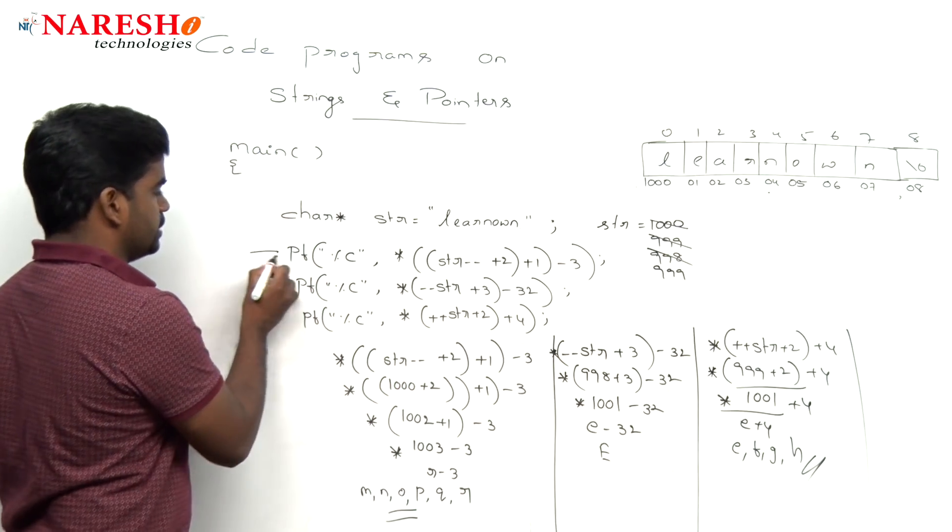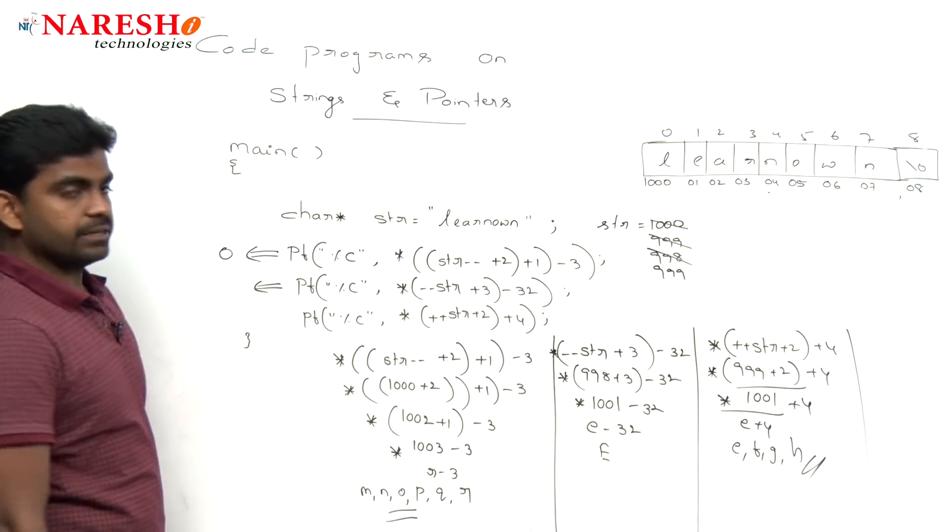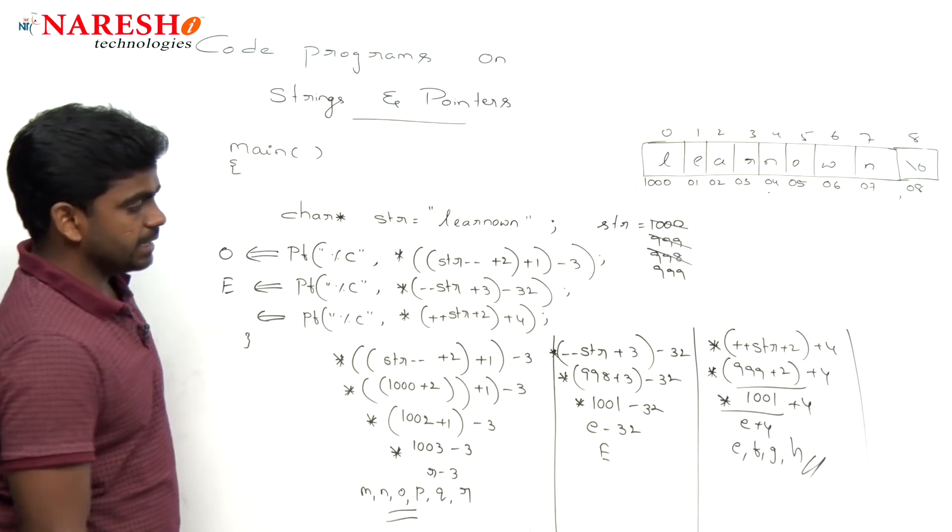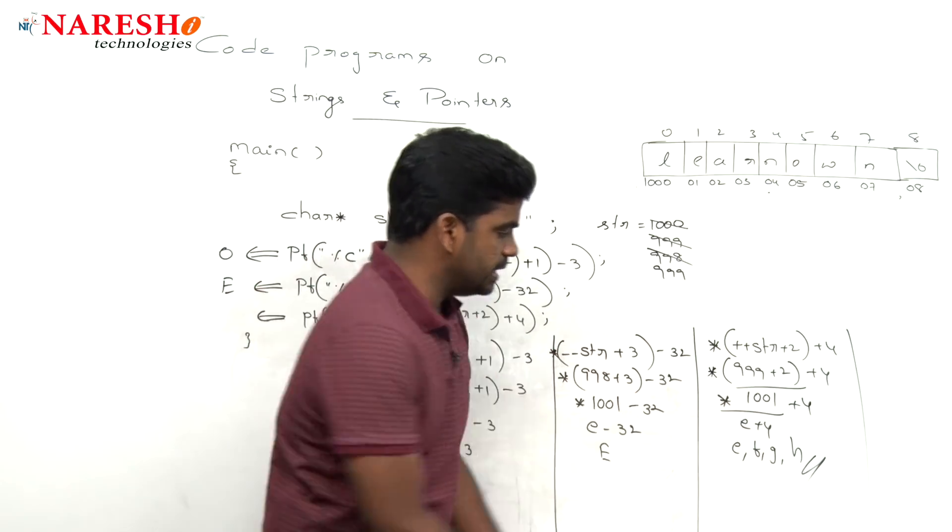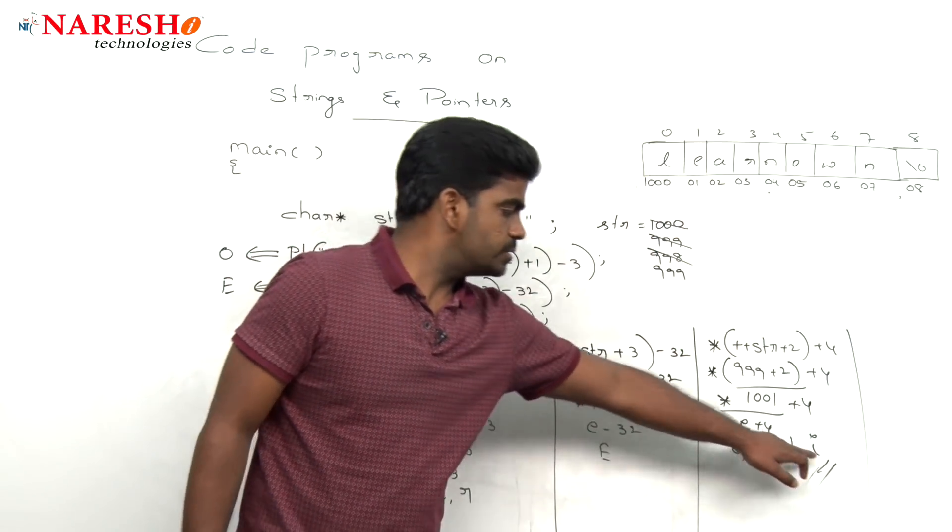So the first expression, first character will be displayed that is O. Second character will be displayed is what? Capital E. And here it is a third character. So what is plus 4? E, F, G, H.